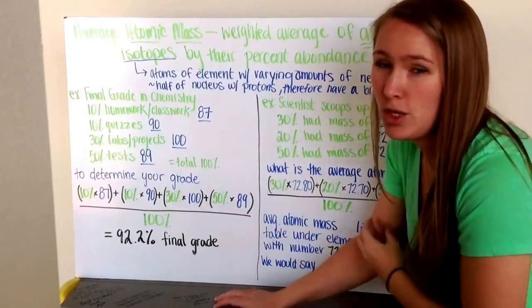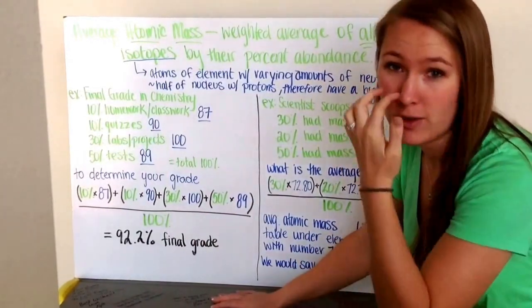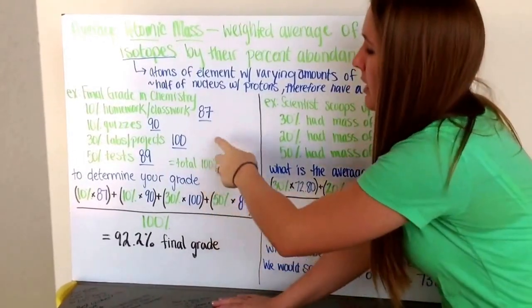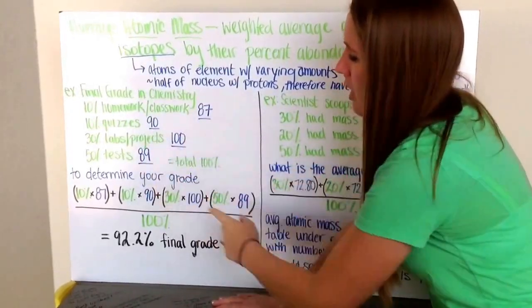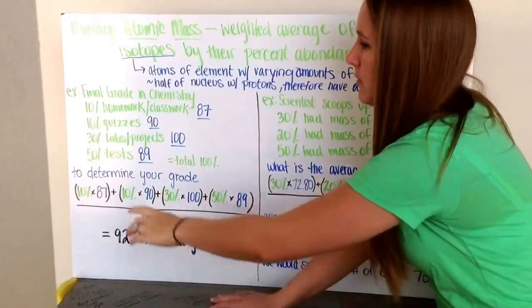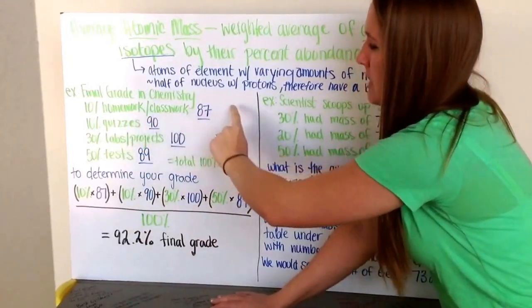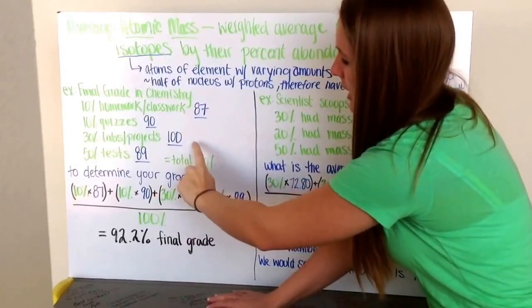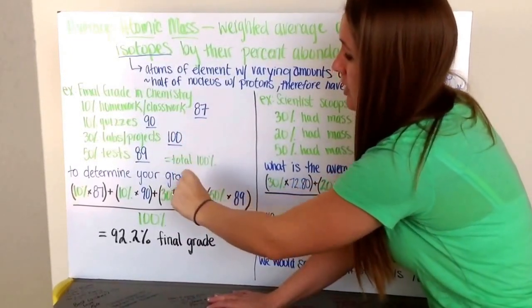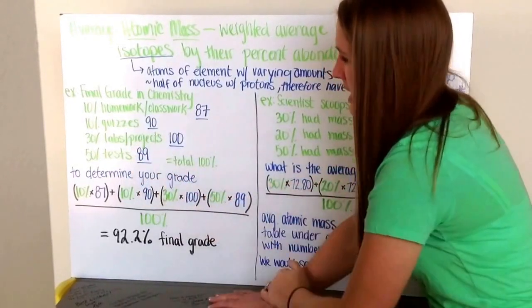To calculate your final grade in chemistry, look at your averages for each category. For homework and classwork your average is 87, for quizzes it's 90, for labs and projects it's 100, and for tests it's 89.